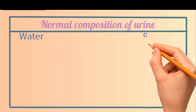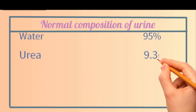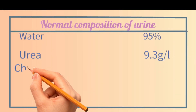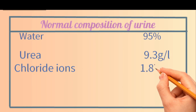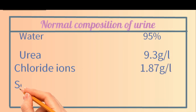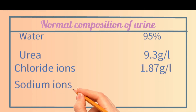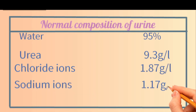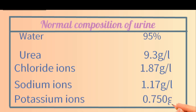The normal composition of urine is: water 95%, urea 9.3 g/L, chloride ions 1.87 g/L, sodium ions 1.17 g/L, and potassium ions 0.75 g/L.